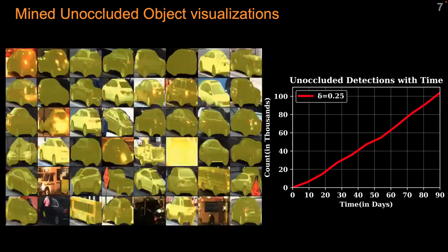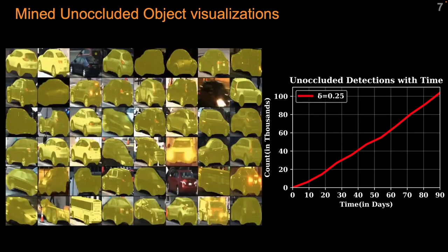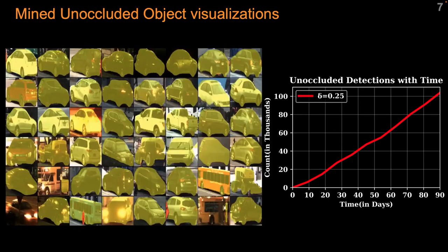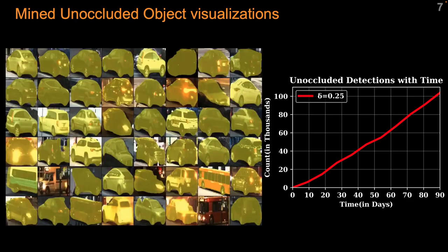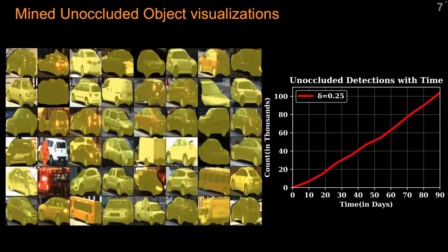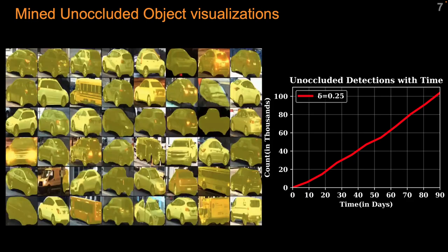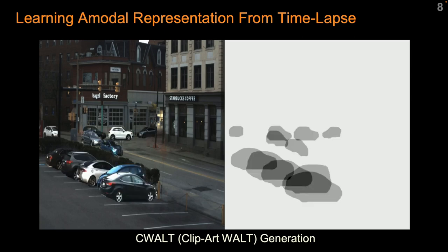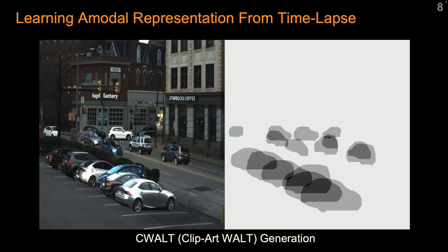Being patient pays off over time. Our method discovers tens of thousands of unoccluded objects at diverse positions, orientations, and appearances. These unoccluded objects are composited in layers back into the background image. We call the resulting dataset Clipart Vault, or Sea Vault.